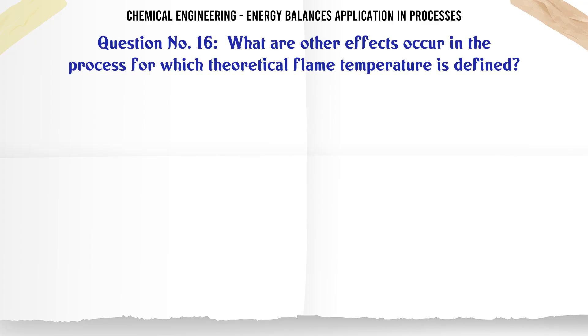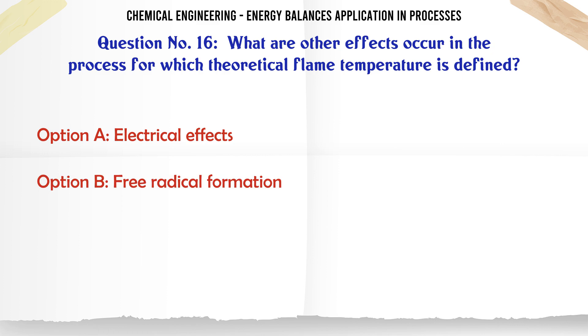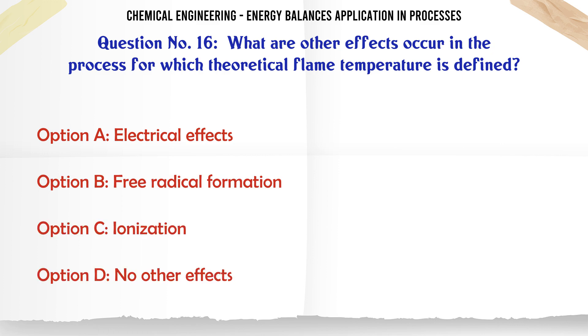What other effects occur in the process for which theoretical flame temperature is defined? A: Electrical effects. B: Free radical formation. C: Ionization. D: No other effects.